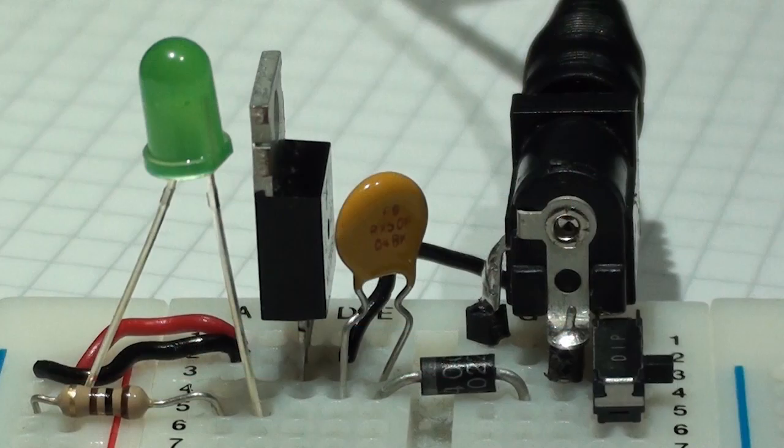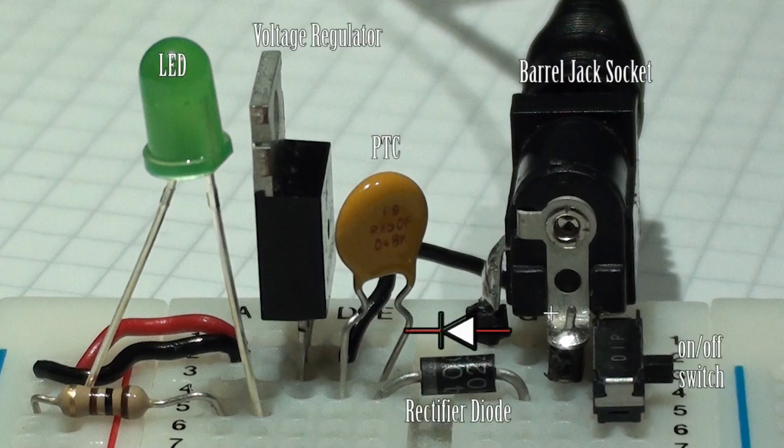I've added three new components to the board. The first one on the rightmost side with the letters DIP on the surface is a simple on-off switch. This will allow us to turn the power on and off to the circuit without disconnecting the barrel jack. I've added a diode in the center, it's a 1N4001 rectifier diode. I've also added a component called a resettable fuse or PTC.